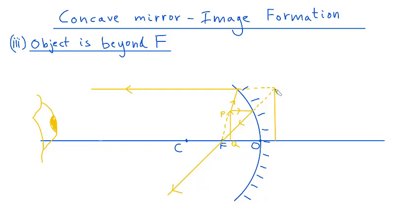So let's draw in the tip of our arrow there. So this is the tip of the image. Let's call that P' and this of course is the image of the bottom of the arrow. So let's call that Q'.